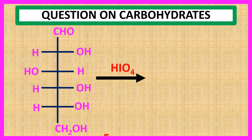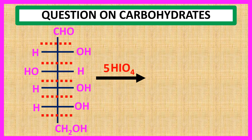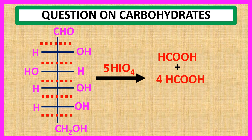Here, five equivalents of HIO4 are consumed for five pairs of adjacent groups — one equivalent, two equivalent, three equivalent, four equivalent, and five equivalent — producing one molecule of formic acid for one CHO group, plus four molecules of formic acid for four CHOH groups, and one molecule of formaldehyde for one CH2OH group.